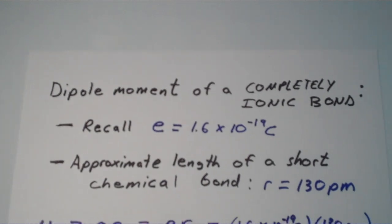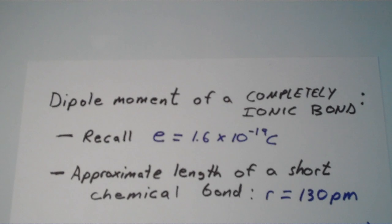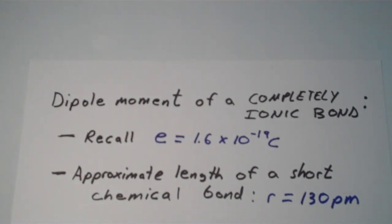We're talking about separating an electron from a proton here. The simplifying assumption is made that the length of the chemical bond is approximately 130 picometers. From this data you can calculate a dipole moment, approximate dipole moment of a bond that is completely ionic.